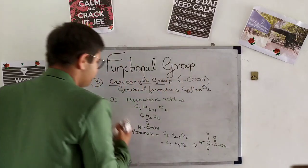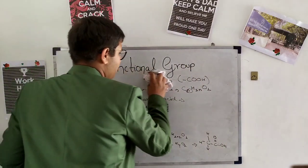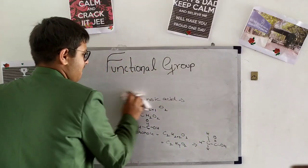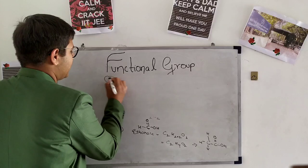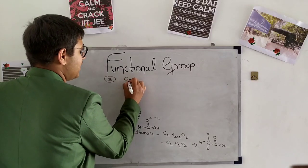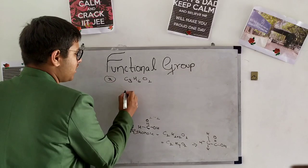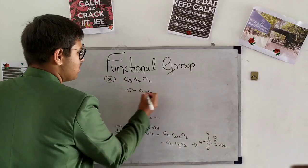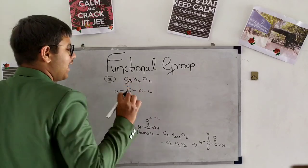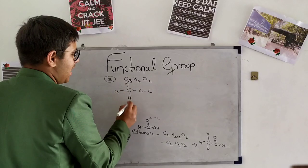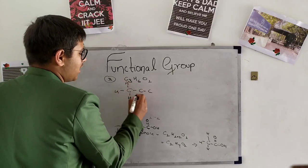Now let us make propanoic acid. For propanoic acid it contains 3 carbons, so C3H6O2. This is the form of propanoic. Now 3 carbons. First carbon we have to fill the tetravalency with hydrogen only.